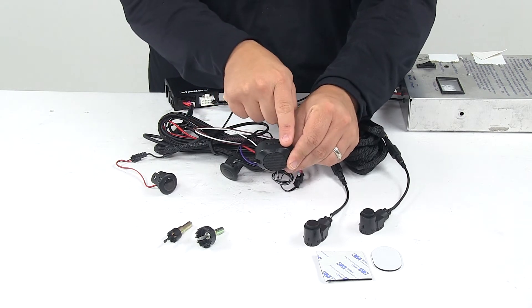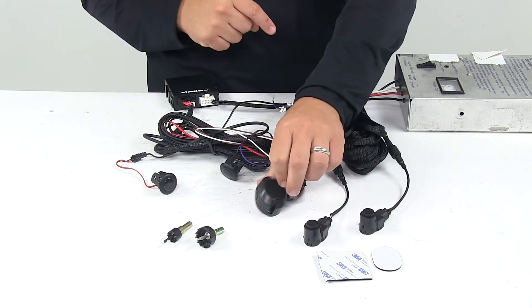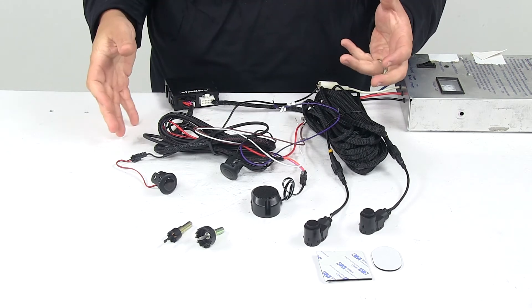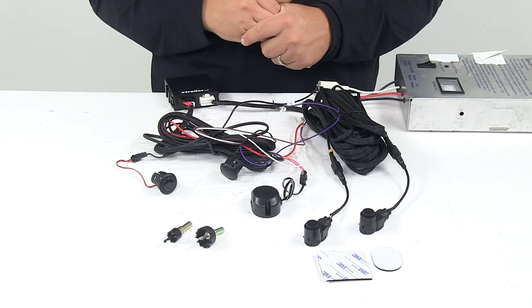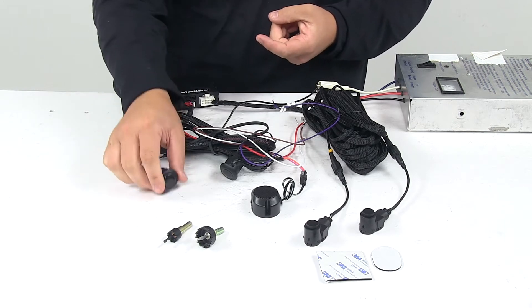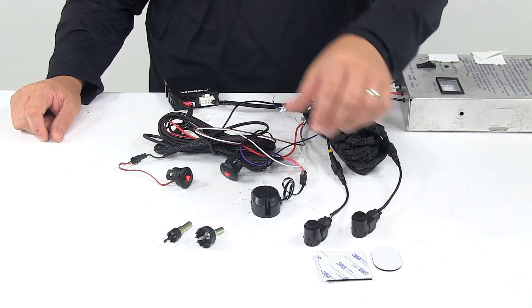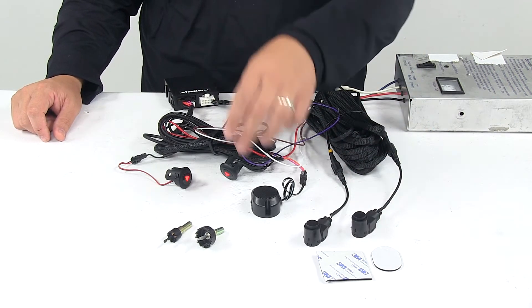You have off, low and high so you can adjust it to fit your needs. What this kit comes with are two visual alert displays, two sensors, one control monitor, one speaker.